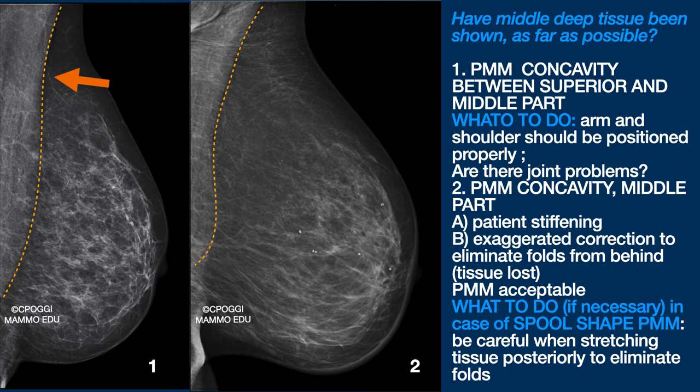In the second image, the concavity is in the central part of the pectoralis major. The reasons are mainly two: either the patient has become very stiff, or we have lost tissues by stretching posteriorly, trying to correct the faults from behind the chest. At least in a case like that, it doesn't need a repetition. This kind of muscle, in image 2, I call a spooled shape muscle.